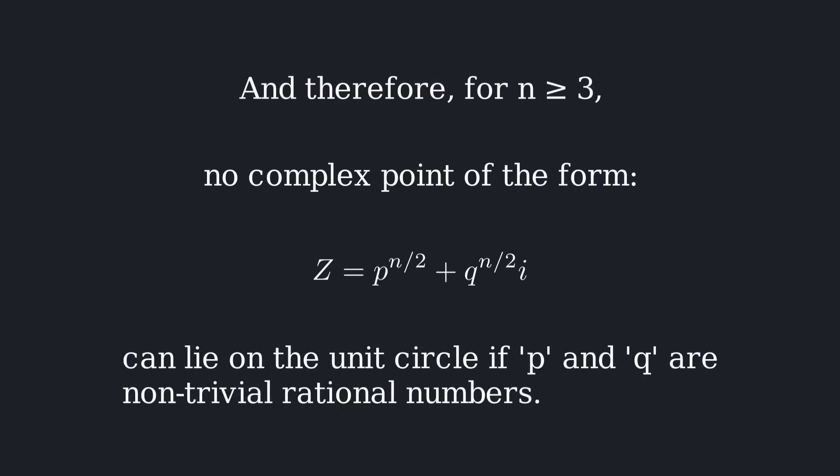The normalized equation p to the n plus q to the n equals 1 has no non-trivial solutions. And therefore, for n greater than or equal to 3, no complex point of the form z equals p to the n over 2 plus i times q to the n over 2 can lie on the unit circle if p and q are non-trivial rational numbers.